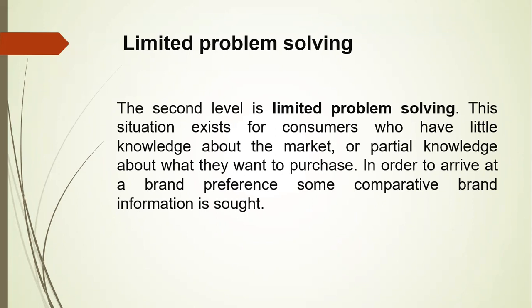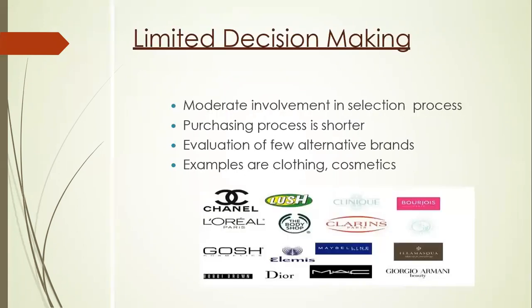Here involvement is very limited — moderate involvement in the selection process. The purchasing process is shorter because you already have a little knowledge about the brands or products available. There is evaluation of just a few alternatives. Examples are clothing and cosmetics: you know which brands are available in clothing but you will look into detail about quality and pricing. Similarly with cosmetics, you have some information but go into further details about the product.